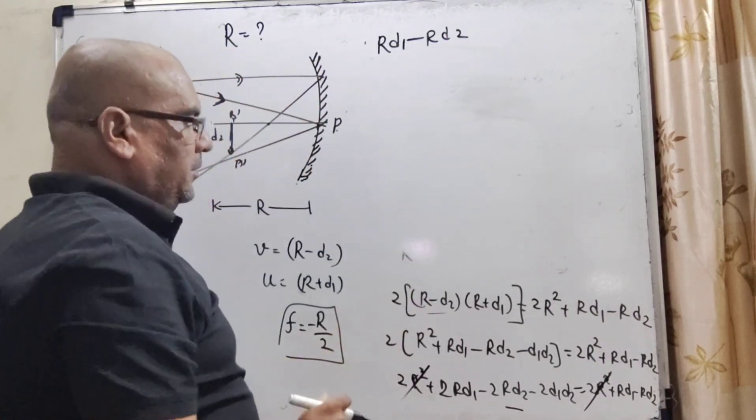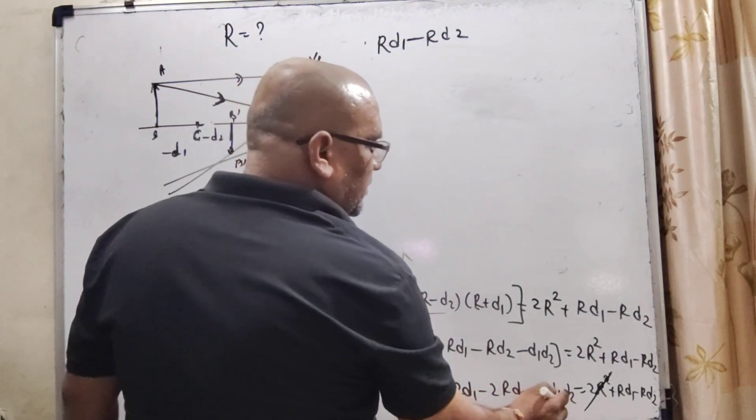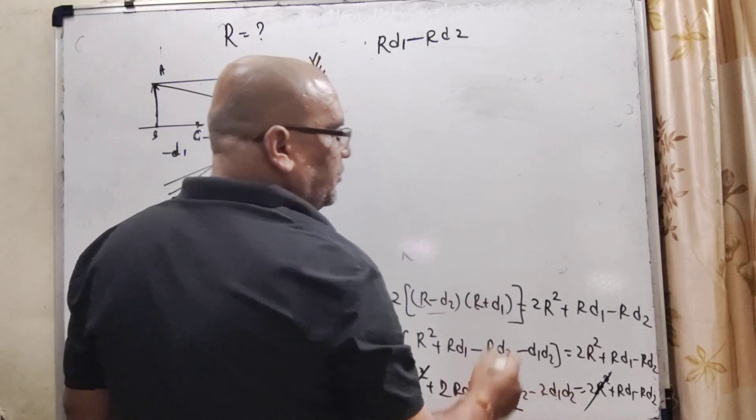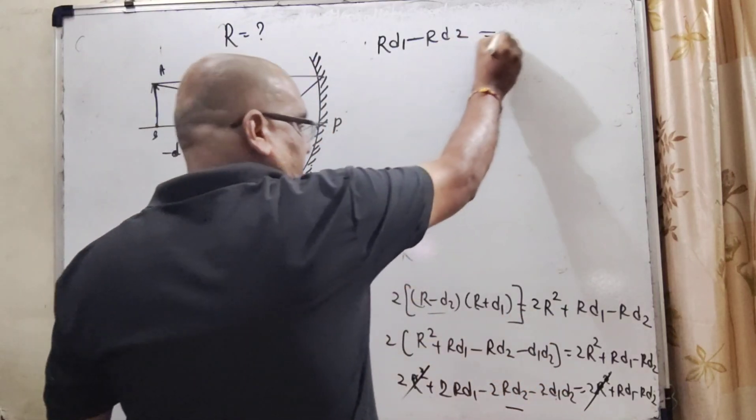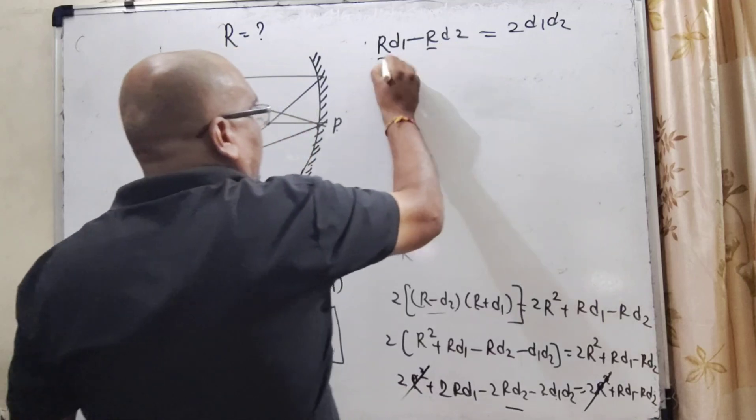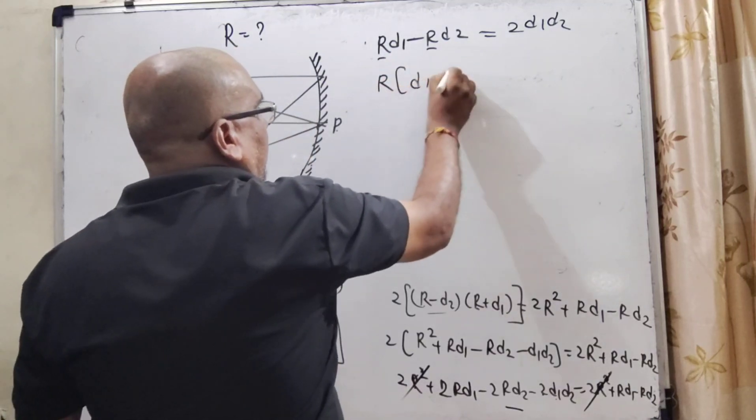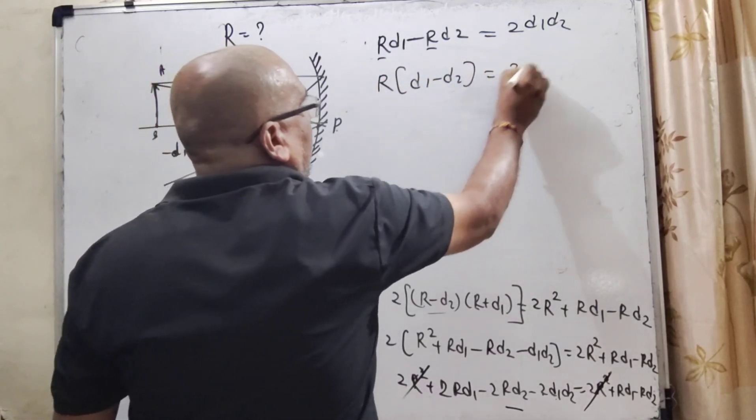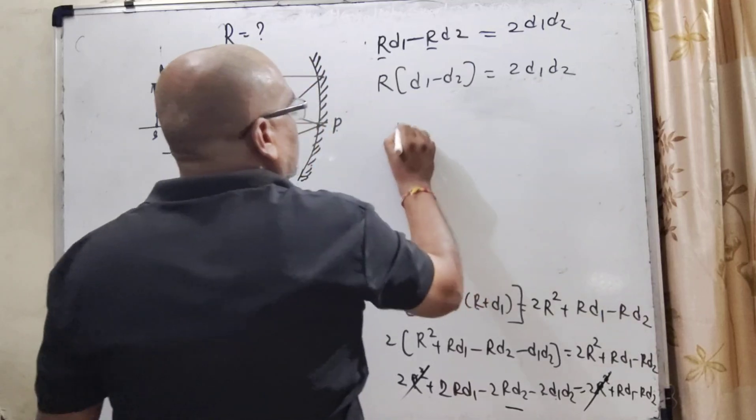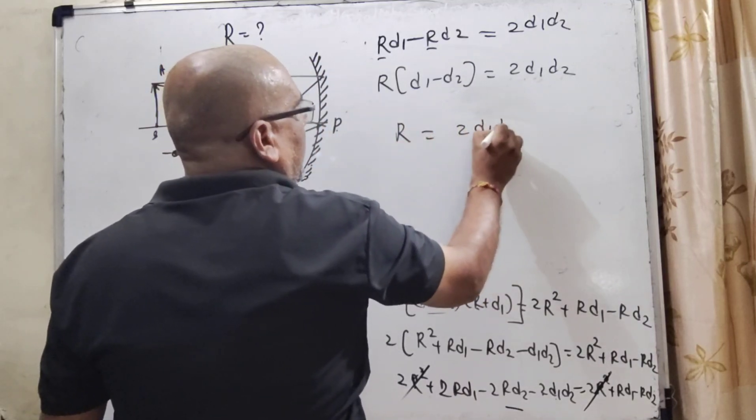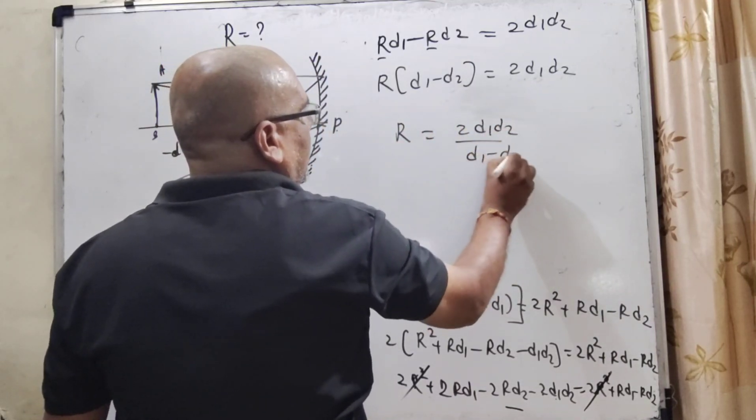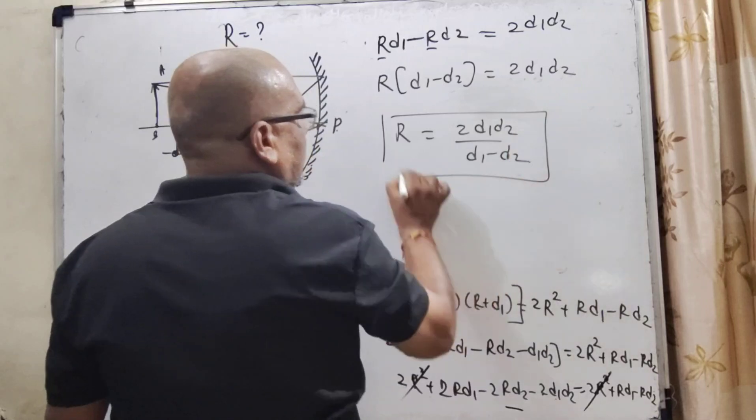And now, this minus 2d1d2 transposing to the right side becomes 2d1d2. Here, R gets common, d1 minus d2, and 2d1d2. So, R is equal to 2d1d2 upon d1 minus d2. That is the correct answer. I hope you understood this question.